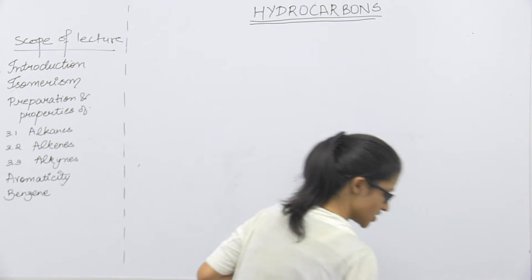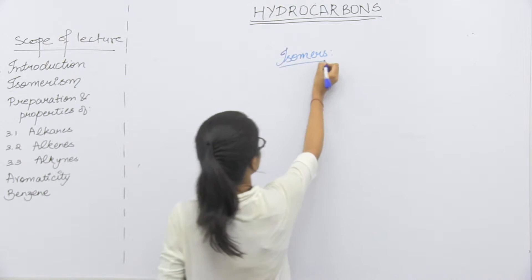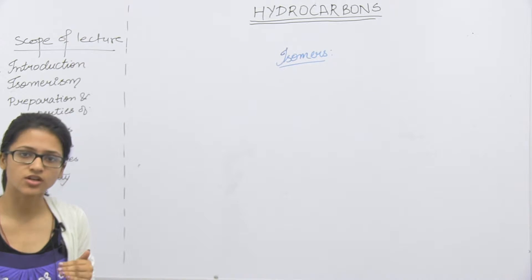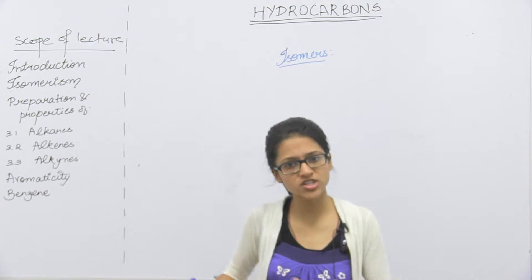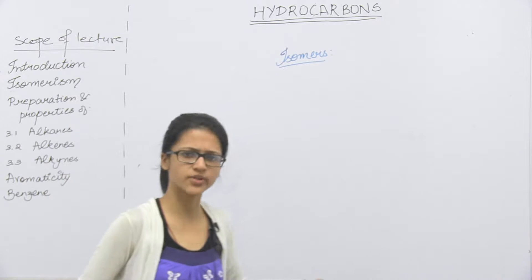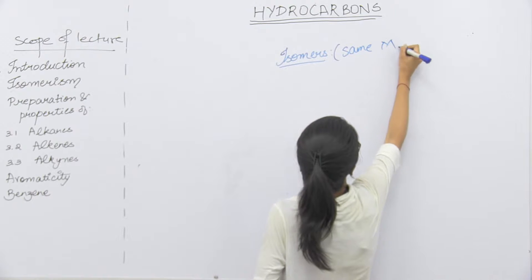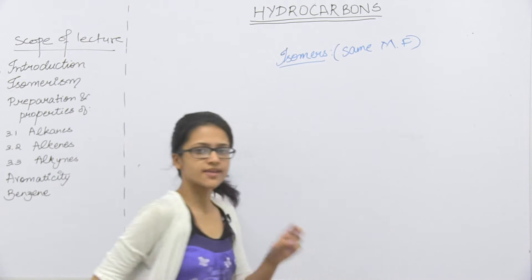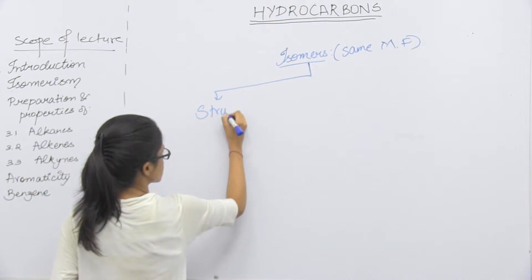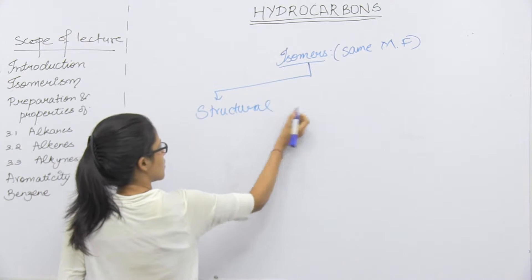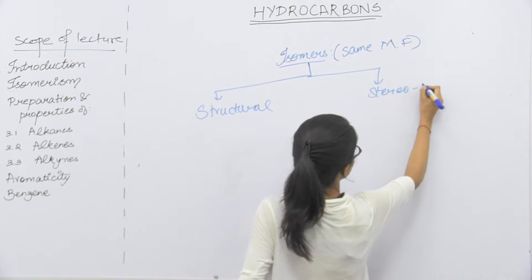Isomers — we will study those compounds with the same molecular formula. The molecular formula is the same, but the structure is different. We will do two parts: one is structural isomers, and one is stereo isomers.